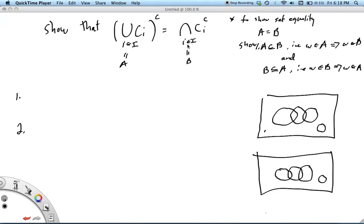So one thing that you have to know to follow this proof is what it means to show set equality. So to show that set A is equal to set B, it's sufficient to show that A is a subset of B, which means that if omega is in A, it implies that omega is in B, and also that B is a subset of A,